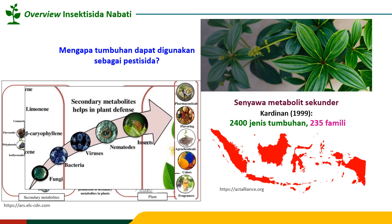Tumbuhan dapat dimanfaatkan sebagai sumber pestisida atau insektisida nabati karena keberadaan senyawa metabolit sekunder. Senyawa metabolit sekunder ini banyak yang berperan dalam hal pertahanan tanaman, dan pertahanan tanaman itu tidak hanya terkait hama dan penyakit, tapi juga untuk semua jenis cekaman.